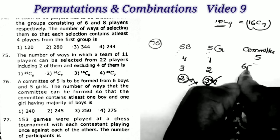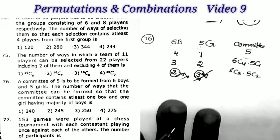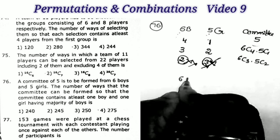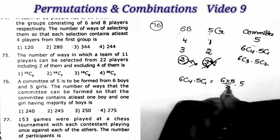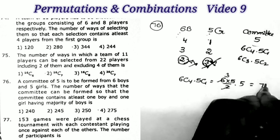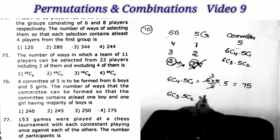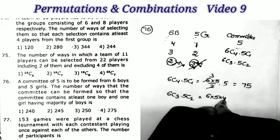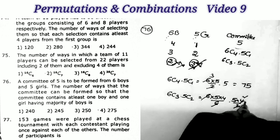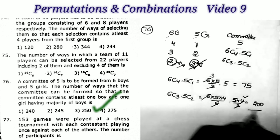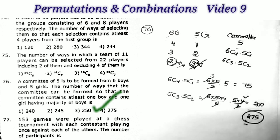First selection: 6C4×5C1 = 6C2×5 = 15×5 = 75. Second selection: 6C3×5C2 = 20×10 = 200. Therefore the total answer is 200 + 75 = 275, and that is the last option.